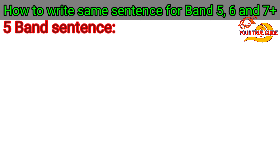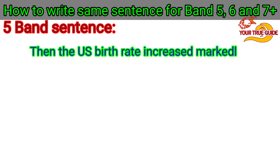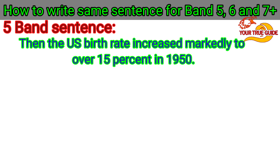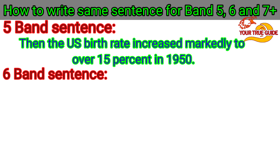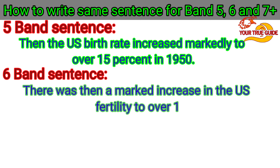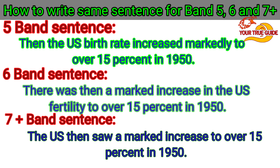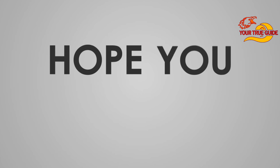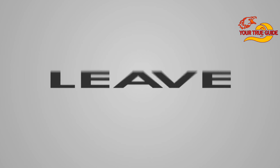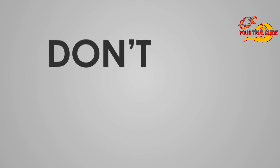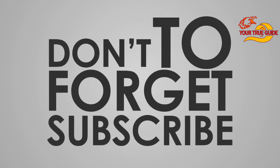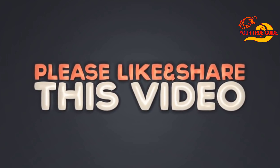The final sentence with 5 band formation is: 'Then the US birth rate increased markedly to over 15% in 1950.' For band 6: 'There was then a marked increase in the US fertility to over 15% in 1950.' For 7 plus bands: 'The US then saw a marked increase to over 15% in the 1950s.' Hope you found it informative and understood the difference between band 5, 6, and 7 plus. Please like, share, and don't forget to subscribe to our channel for more videos. Thanks for watching. We'll see you next time.